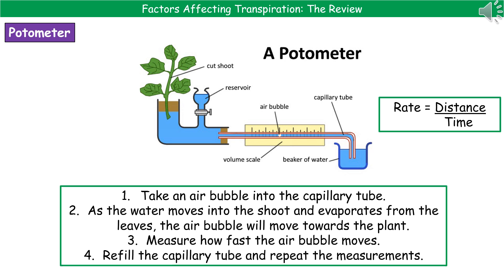The way we set this up is we take an air bubble into the capillary tube. Then as the water moves into the shoot and evaporates from the leaves, the air bubble moves towards the plant. So we can record how far that bubble moves in a certain time, and then use the calculation of distance divided by time to give us the rate.